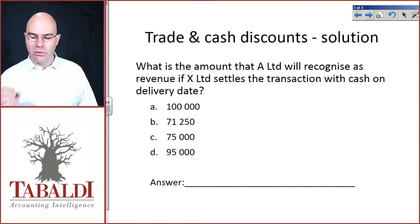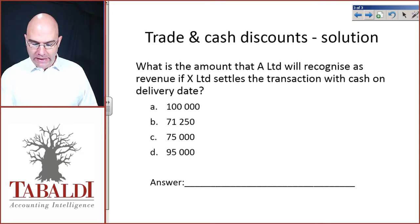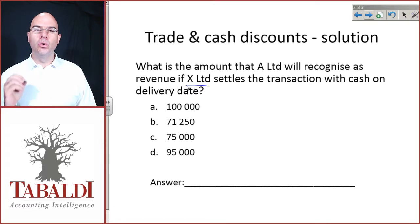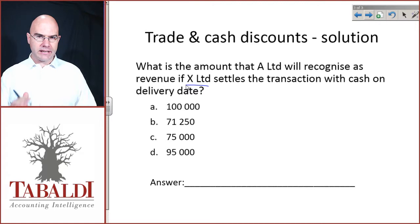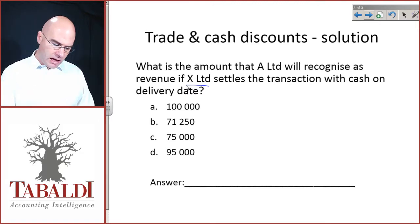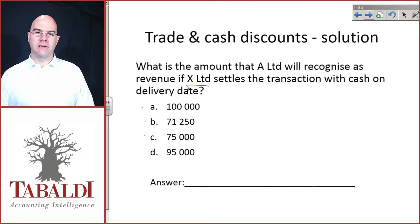What is the amount that A Limited will recognize as revenue if X Limited settles the transaction with cash on delivery? I want you to take a second, do the calculation and try to tell me: is it A, B, C, or D? Push pause and do the question.